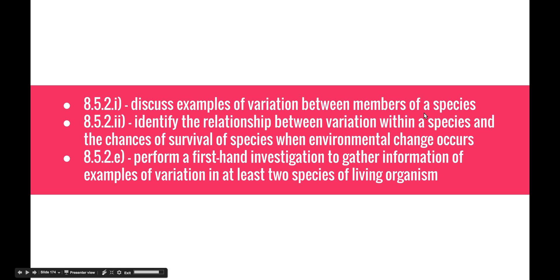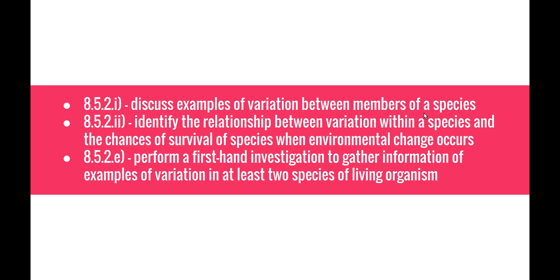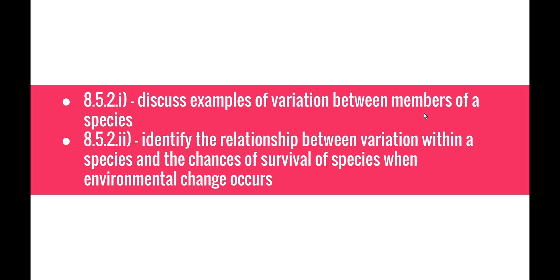Welcome to the next video in the evolution series. This video will be looking at three dot points from the Evolution of Australian Biota syllabus: 8.5.2.1, discuss examples of variation between members of a species; 8.5.2.2, identify the relationship between variation within a species and the chances of survival when the environment changes; and 8.5.2e, perform a first-hand investigation to gather information of examples of variation in at least two species of living organisms.